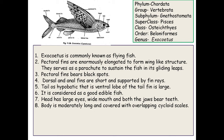The next fish is Exocetus, commonly called the flying fish. The pectoral fins are very large and adapted for flying. Classification: Phylum Chordata, Group Vertebrata, Subphylum Gnathostomata, Superclass Pisces, Class Osteichthyes, Order Beloniformes, Genus Exocetus. The pectoral fins are enormously elongated to form a wing-like structure and serve as a parachute to sustain the fish in gliding position.